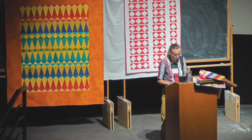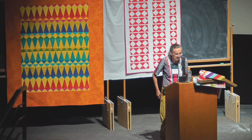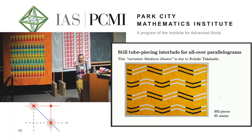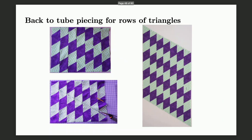I also have to show this: it's a curvature blindness illusion due to Kosuke Takahashi. All the curves here are identical, but the color makes some rail fences look zigzag and abrupt, while others look curvier — even though they're all the same. It's just the color giving this illusion.